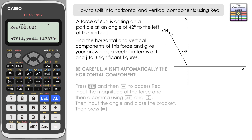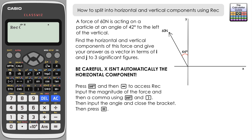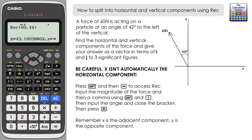I'll show you two ways. First, inputting as before — using the rectangular coordinates feature with magnitude 60 newtons, comma, angle of 44 degrees. Close brackets and press equals. Looking at these results carefully: the x value of 43.16 doesn't automatically refer to the x-axis here. Because the angle is adjacent to the vertical rather than the horizontal, x will actually be the vertical component, giving 43.2.